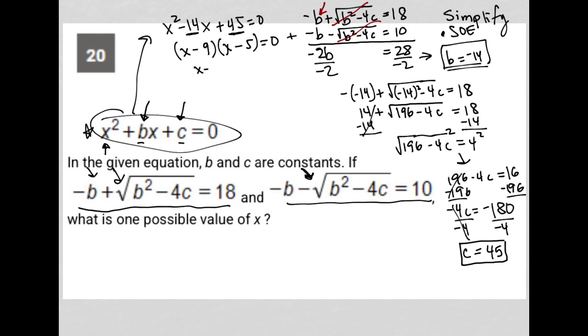When I set each of those individually equal to 0, I get x = 9 as a solution, and I get x = 5 as a solution. The question asks what is one possible value of x. Well, that means either 5 would be correct or 9 will be correct.